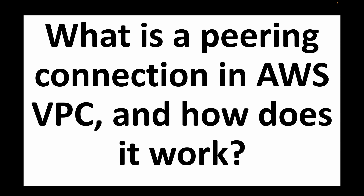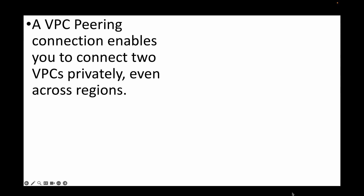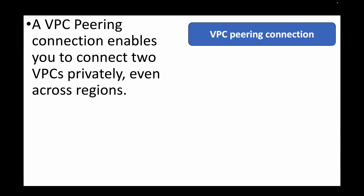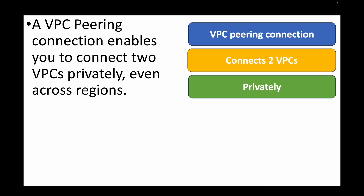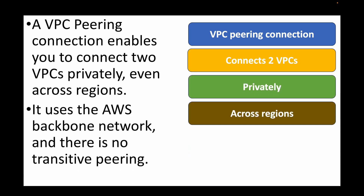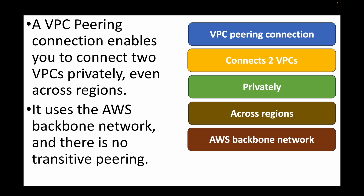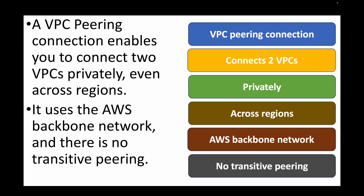The next question is: what is a VPC peering connection and how does it work? VPC peering enables private connectivity between two VPCs, even across two regions. It uses the AWS backbone network. There is no transitive peering — each pair of VPCs needs its own peering relationship. You can create a peering connection only between two VPCs, so if you have more than two VPCs, you'll need separate peering connections between each pair.